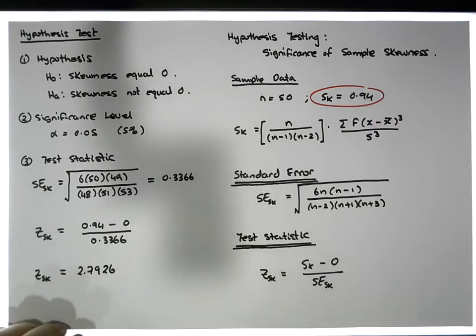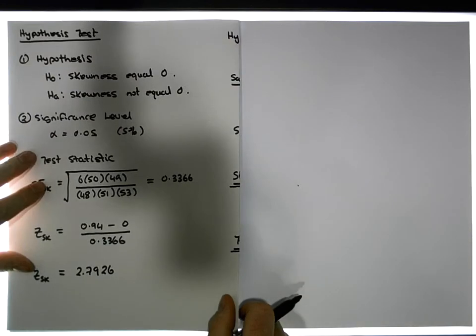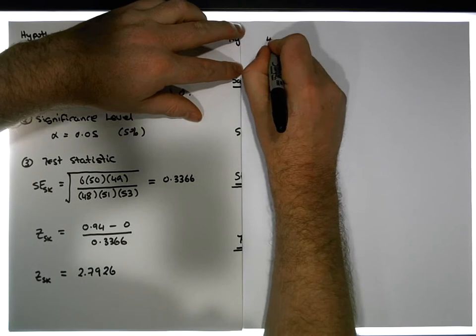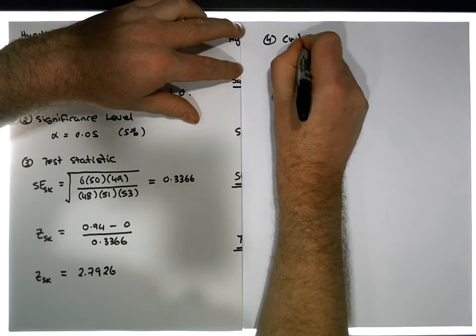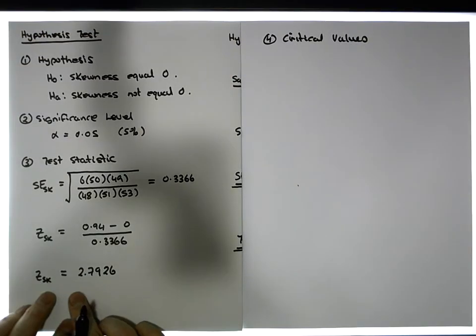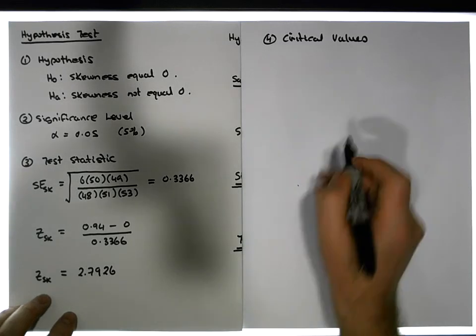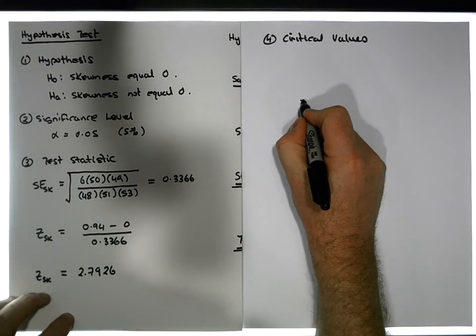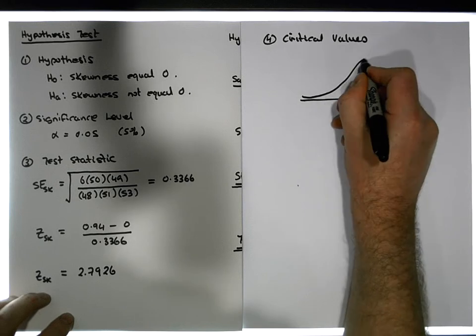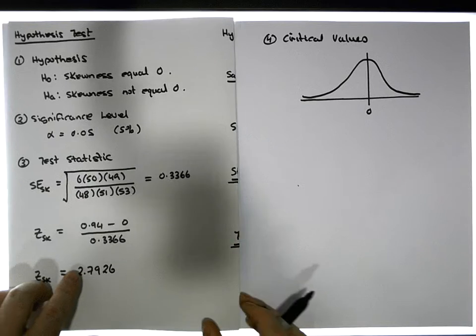Now that we know our test statistic, we can proceed to calculate the critical values. This is step four — calculate the critical values. Our test statistic is a z-statistic, so we're going to be working with a z-distribution.